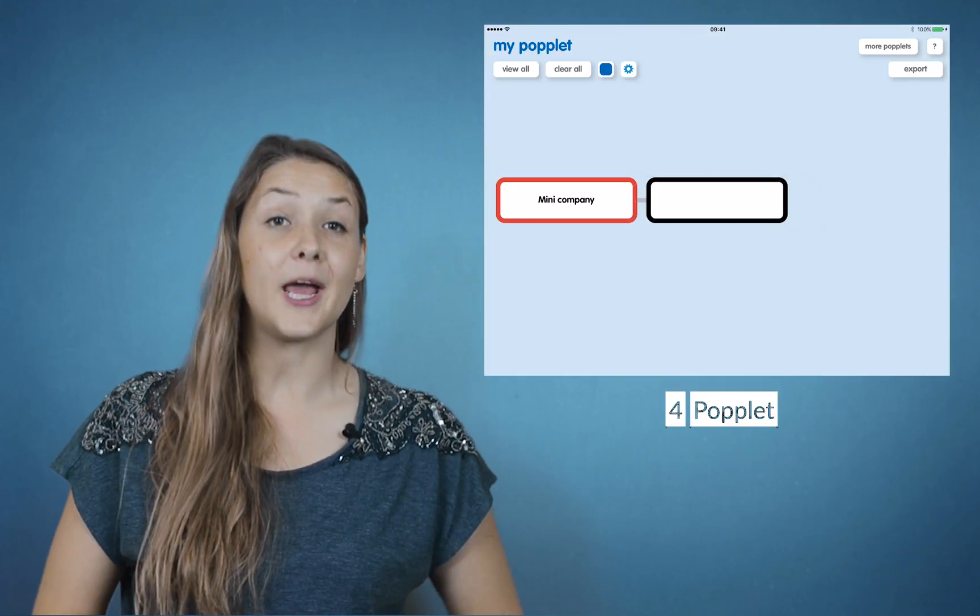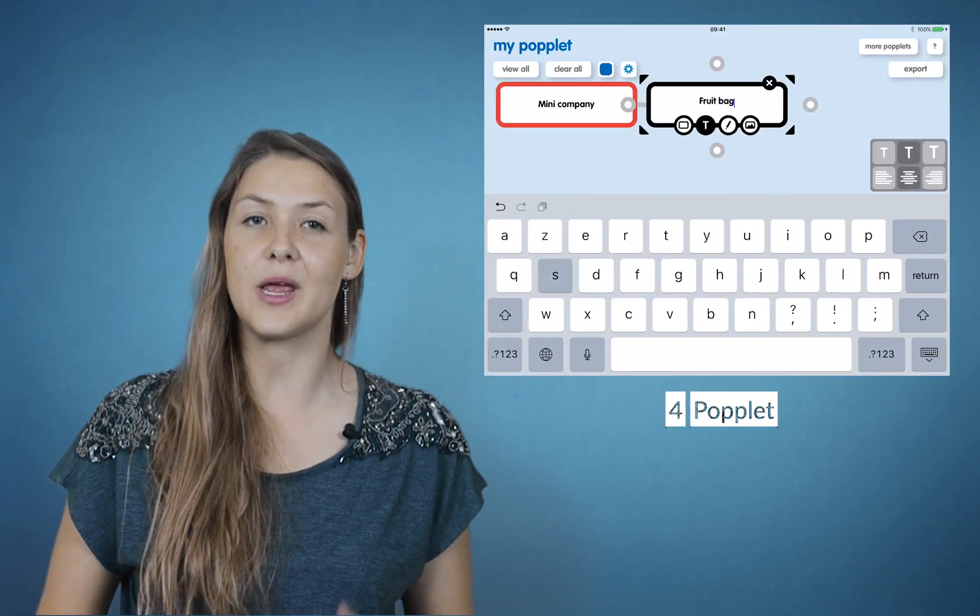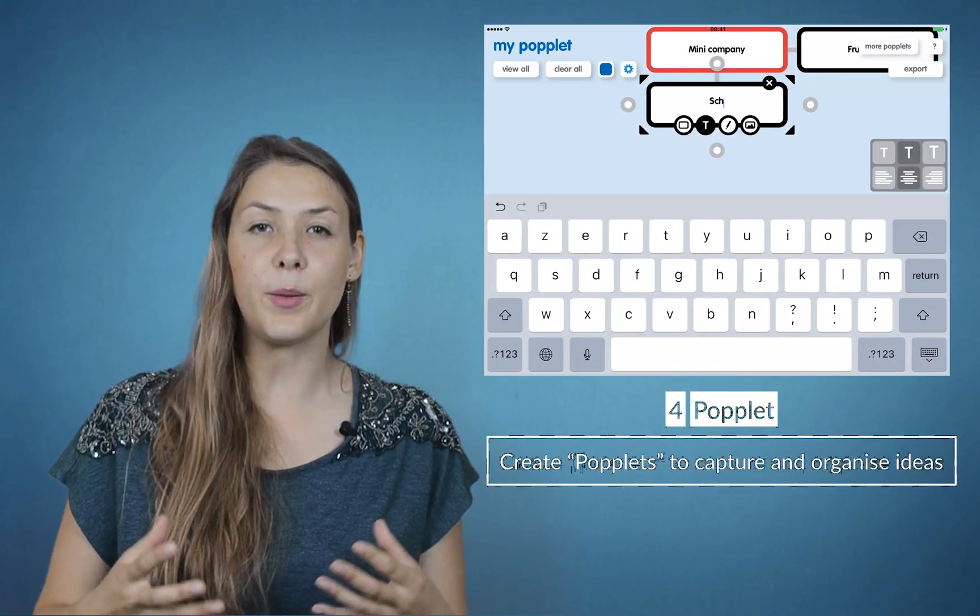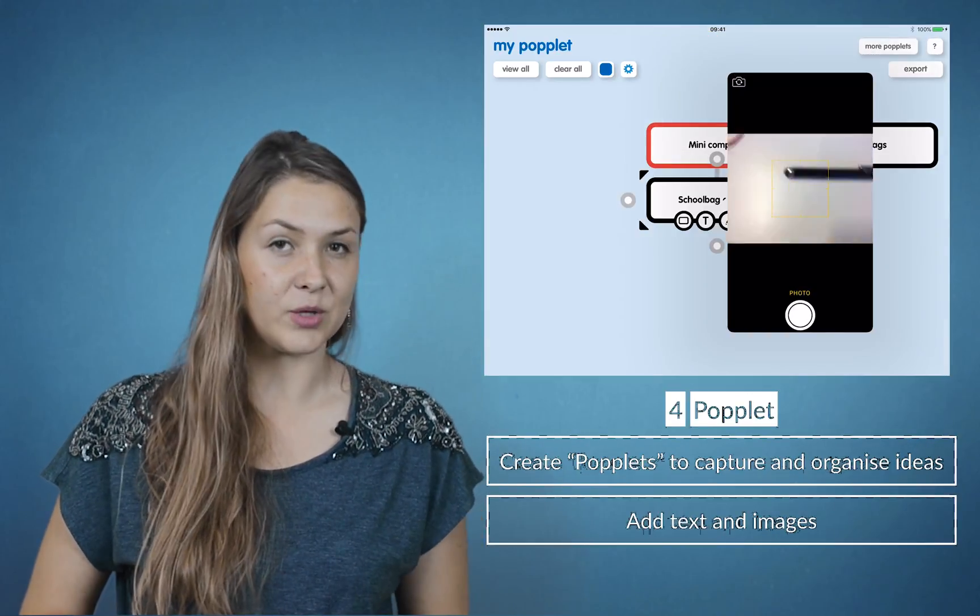Number 4 on my list is Popplet. Popplet is perhaps the simplest tool to capture and organize ideas. With a few clicks on your screen you can make Popplets, or little squares, and add text and images.